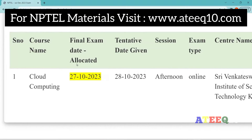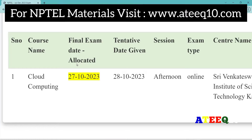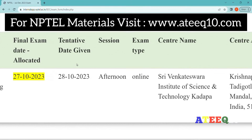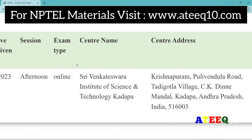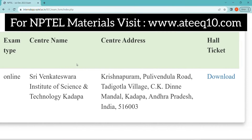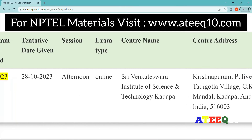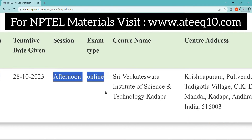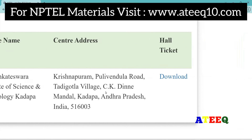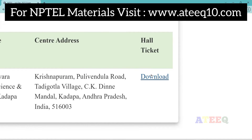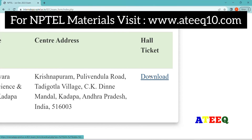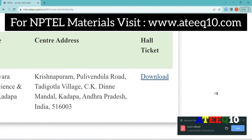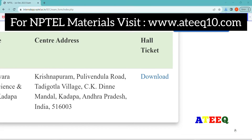Next you can see the serial number and course type. If you have registered for two courses, a second serial number will appear below. The course name and final exam date shows your exam date. The 'to date' is the expected date given by NPTEL. The session will show either forenoon, which means morning, or afternoon. By clicking download, you can download the hall ticket successfully.